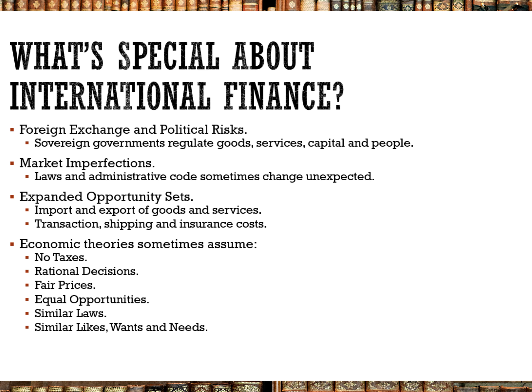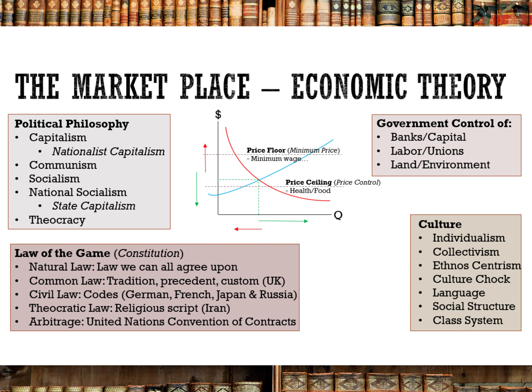One thing to pay attention to is that a lot of books, especially educational books, do not list their assumptions. When you read economic books, especially if they're academic in nature, you have to pay attention to that some theories assume certain things — such as there are no taxes, all decisions are rational, prices are fair, there's equal opportunities everywhere, all the laws are similar, and everyone likes, wants, and needs the same thing.